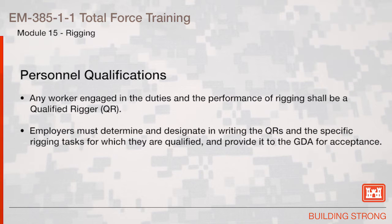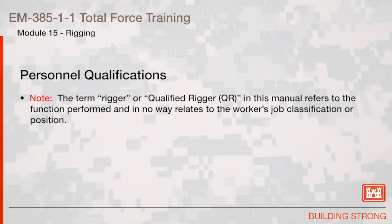A qualified rigger demonstrates the ability to utilize rigging materials and principles and is capable of safely inspecting and performing rigging operations. Any worker engaged in the duties and performance of rigging shall be a qualified rigger. Employers must determine and designate in writing the qualified riggers and the specific rigging tasks for which they are qualified and provide to the GDA for acceptance. The term rigger or qualified rigger in this manual refers to the function performed and in no way relates to the worker's job classification or position.